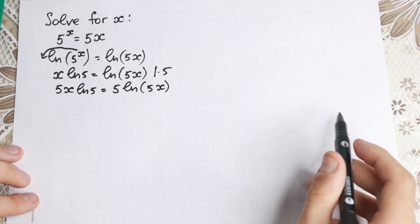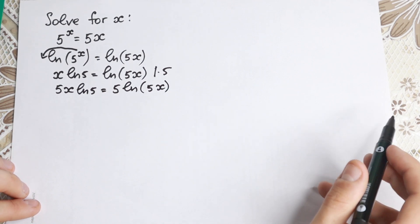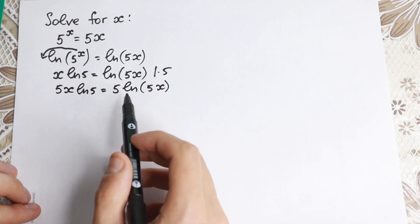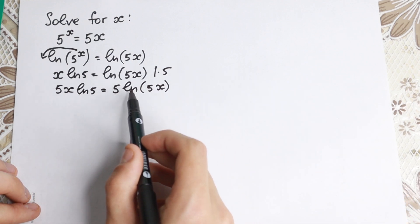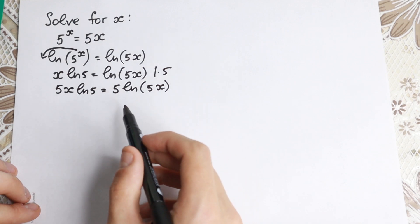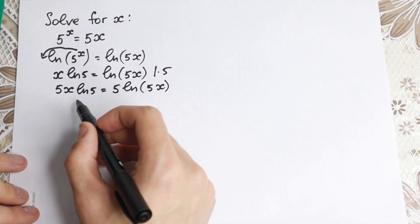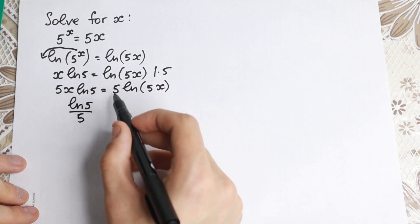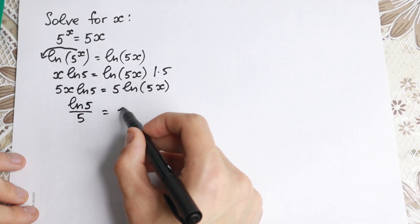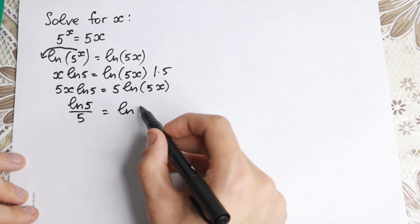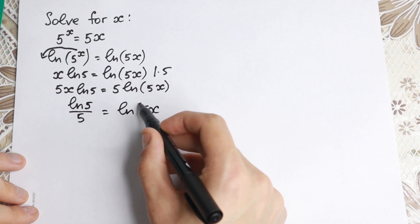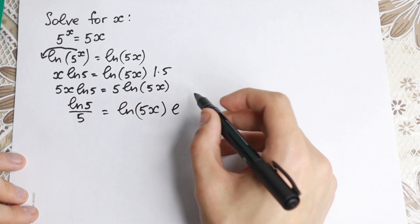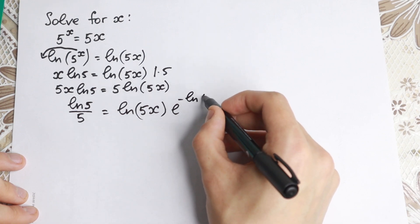I'm going step by step toward the Lambert W function. Now let's divide both sides by 5 and by 5x. On the left-hand side we have ln 5 divided by 5. On the right-hand side we have ln(5x) divided by 5x. And I want to write this element 5x as e to the power of minus ln(5x).